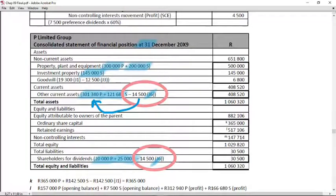Your goodwill is again a net amount being the 19,300 that originated through the ad acquisition consolidation journal entry ordinary shares and against that you've offset the gain from bargain purchase from the ad acquisition consolidation journal entry preference shares.